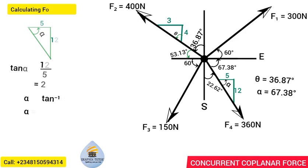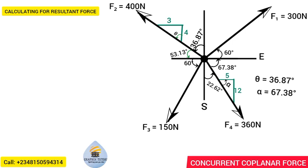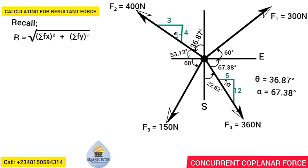Now we want to find the resultant force of this concurrent coplanar force system. The resultant force R equals the square root of (ΣFx)² plus (ΣFy)². To get R, we first need to calculate ΣFx and ΣFy. This is Equation 1.